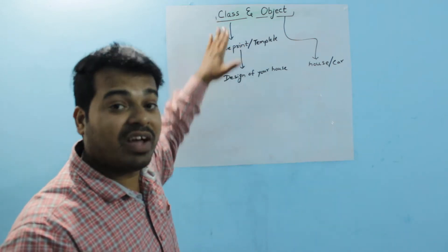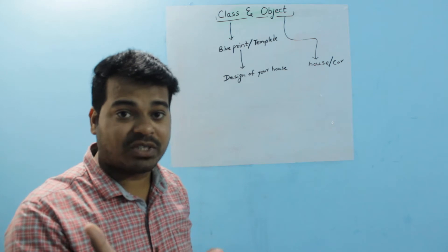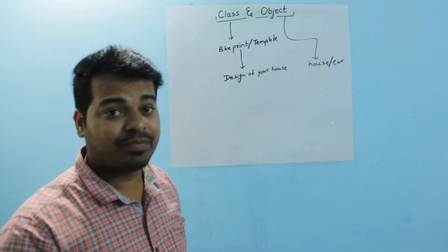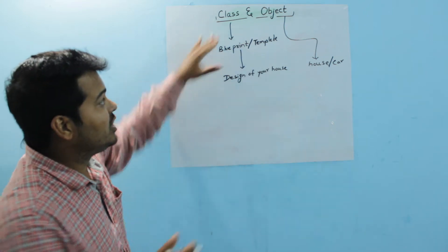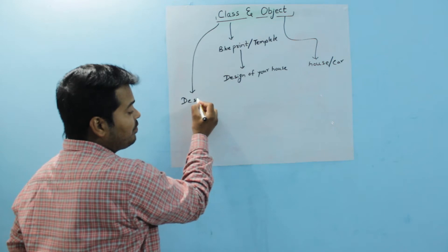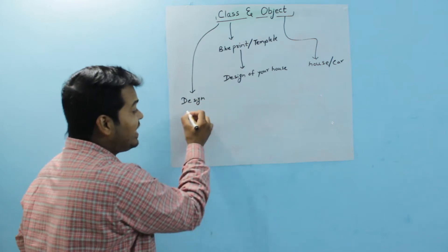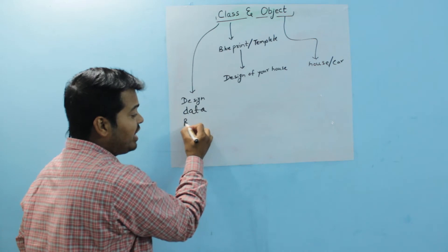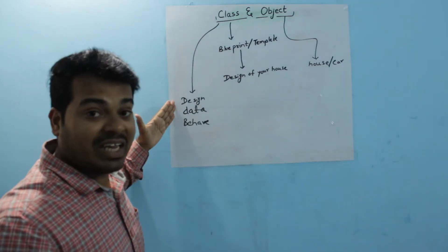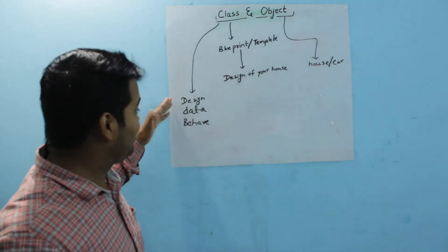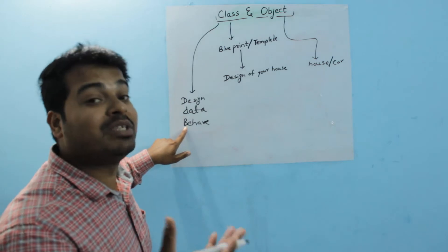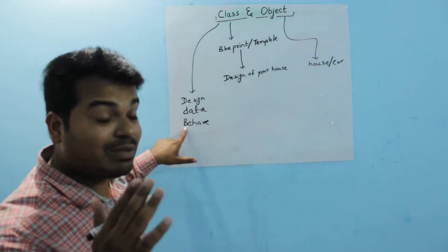A class defines the design of an object, the data it can hold, and the way it can behave. Your class creates the design, provides the data the object can hold, and defines the way the object can behave. So your class provides the design, the data, and the behavior of your object.